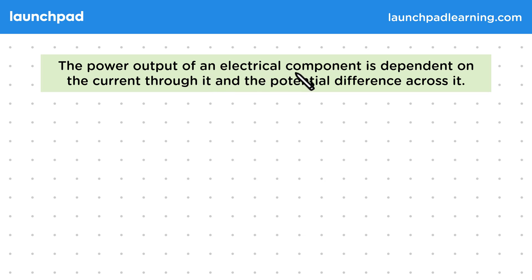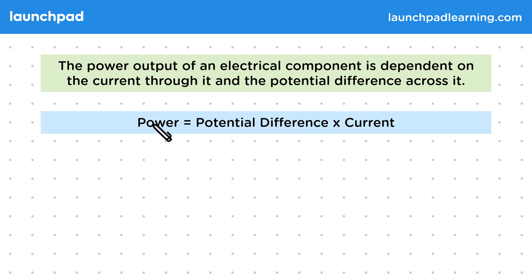The power output of an electrical component is dependent on the current through it and the potential difference across it. The power is the rate at which the component converts energy from the charge carriers into other forms. So the power is determined by the amount of energy given by a charge carrier and how frequently they pass through the component. Power is equal to the potential difference multiplied by the current.